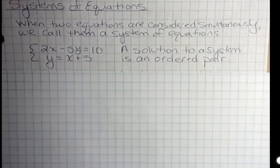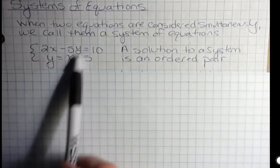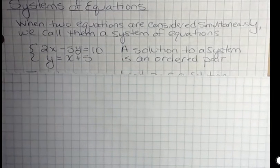If there is a solution to a system, it's an ordered pair because we have to know if it's a solution, we have to figure out what the x and the y are, whatever variables we're using there, but what are the two variables in that system?